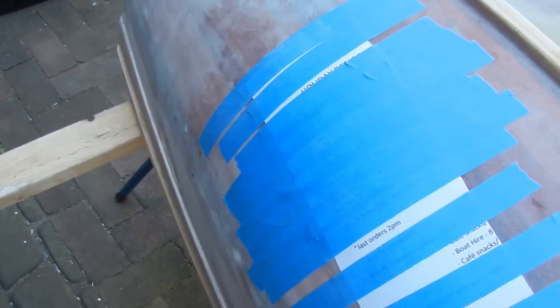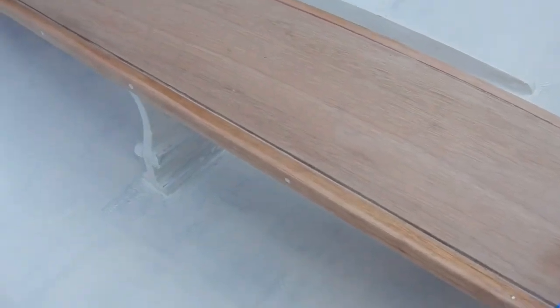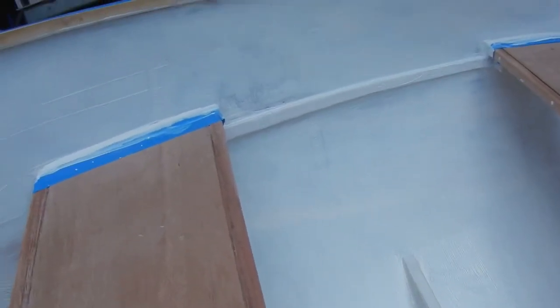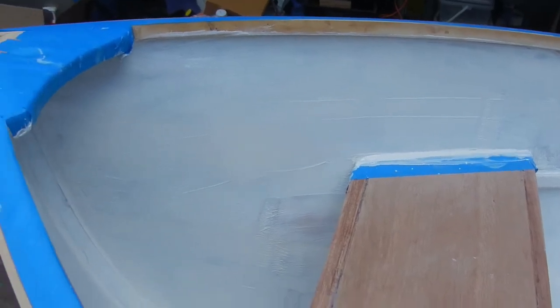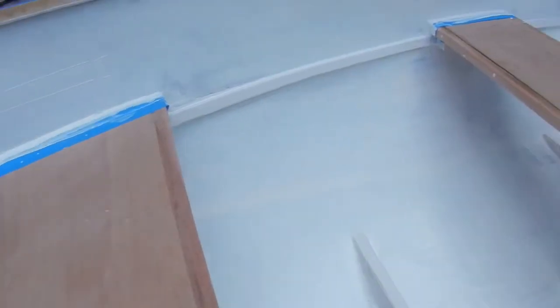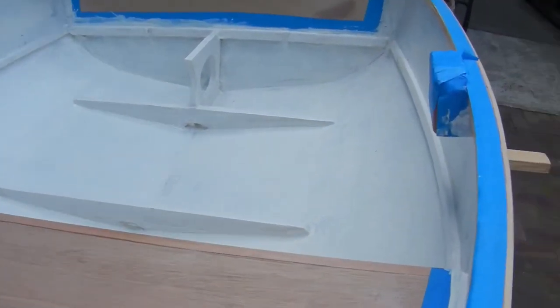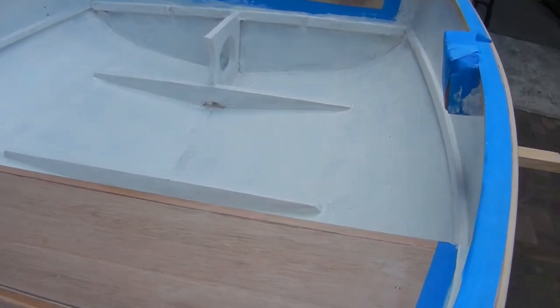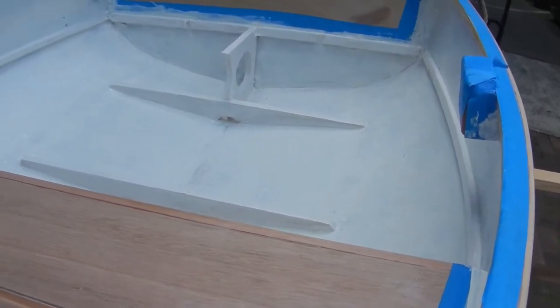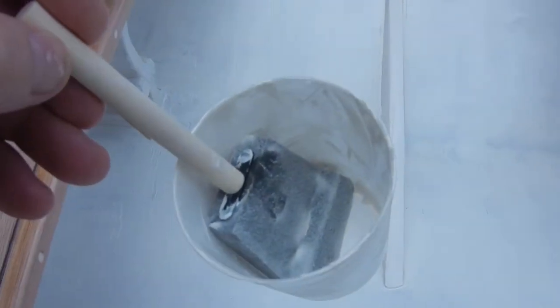We put two coats of undercoat on late last night and it's still a little bit tacky. You can see patches of it. I'm going to put a couple more coats on above the waterline area. Below the waterline area it's sealed, I'm not worried about it—it can look a little bit ugly—but above the waterline I want to tidy it up a bit more.